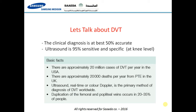What about below the knee level? Below-knee level is a relatively insignificant risk because it is very rare to have a serious complication of a below-knee venous thrombosis. However, ultrasound sensitivity and specificity remains relatively high. Some basic facts: there are approximately 20 million cases of DVT per year in the USA, and approximately 20,000 deaths per year from pulmonary thromboembolic disease in the UK.